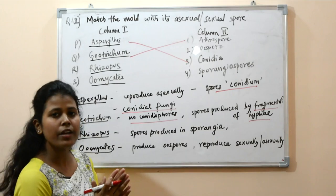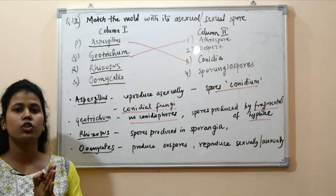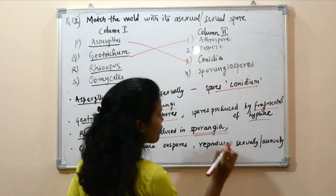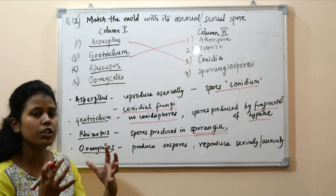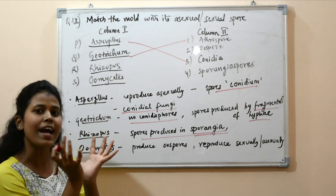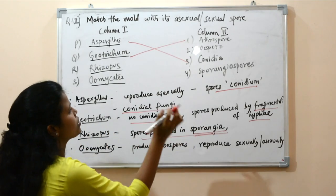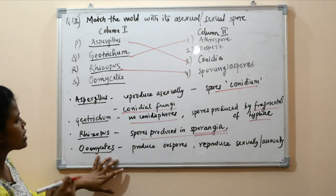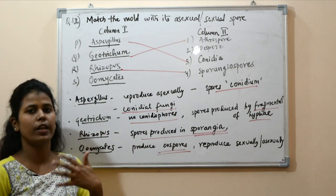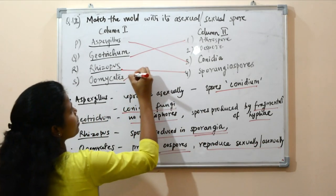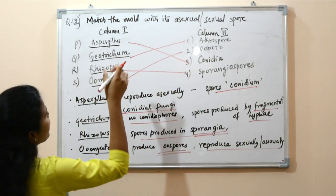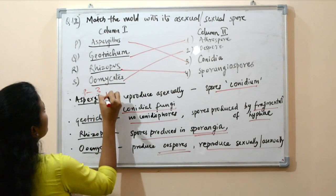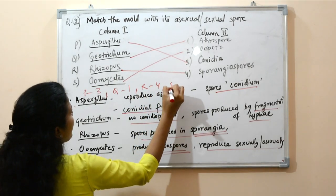Rhizopus, also known as the bread mold, produces spores in a structure called a sporangiophore. The spores are called sporangiospores. The sporangiophore at the tip of the hyphae looks like a sac containing all the sporangiospores. Next, Oomycetes produce spores known as oospores and can reproduce both asexually and sexually. So the answer is: Aspergillus → conidia, Geotrichum → arthrospores, Rhizopus → sporangiospores, Oomycetes → oospores. The answer is P3 Q1 R4 S2, option B.